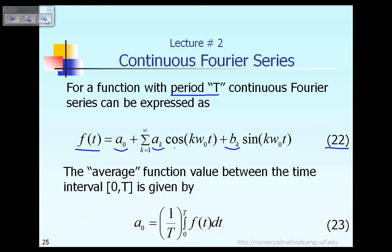The formula for a0, ak, and bk will be given to you first, and then after that I will prove to you why and how we get those formulas. The formula for a0 is given according to equation 23, which basically says the constant a0 is equal to 1 divided by the period capital T, multiplied with the integral from 0 to capital T of the given function f of t dt. That is the formula to compute the constant a0, and I'm going to prove it to you later on.